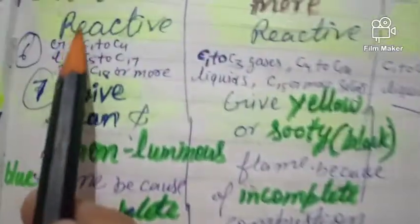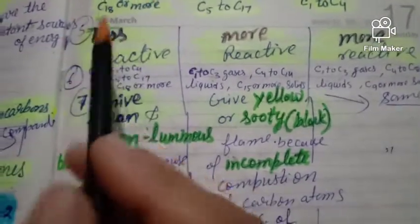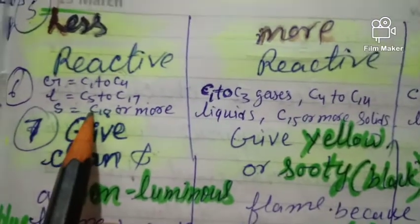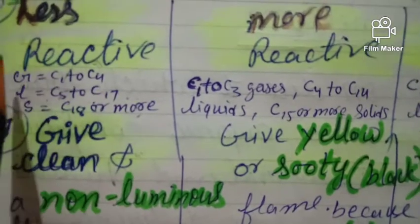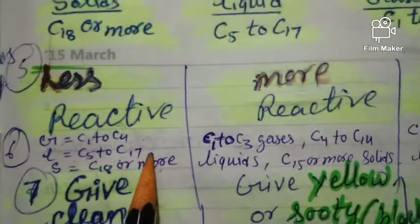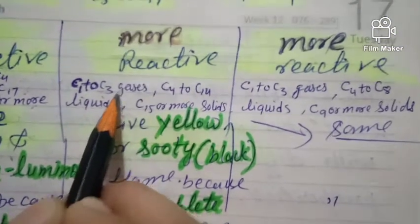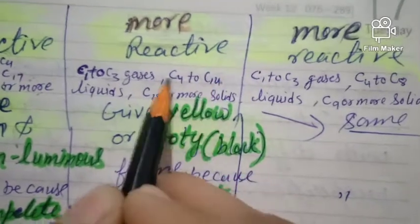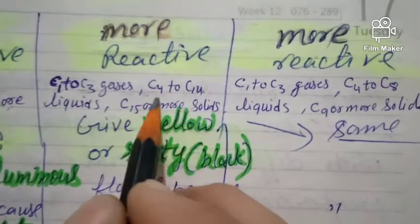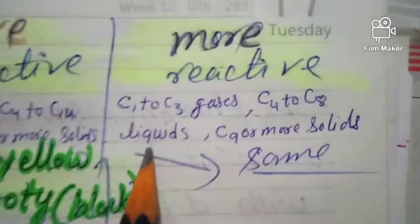For saturated hydrocarbons like alkanes, carbon atoms 1 to 4 behave as gases, carbon 5 to 17 behave as liquids, and carbon 18 or more behave as solids. For unsaturated hydrocarbons (alkenes), C1 to C3 are gases, C4 to C14 are liquids, and C15 or more are solids. For alkynes, C1 to C3 are gases, C4 to C8 are liquids, and C9 or more are solids.